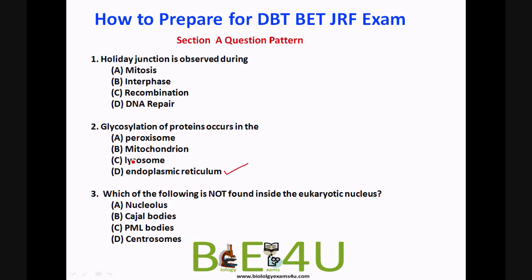The third question: which of the following is not found inside the eukaryotic nucleus? You can expect many questions framed as 'not found' or 'incorrect statement.' Options are nucleolus, Cajal bodies, PML bodies, and centrosome. Both Cajal bodies and PML bodies are present inside the nucleus of eukaryotic cells, especially in cells undergoing continuous proliferation. The answer is centrosome, which appears during cell division.